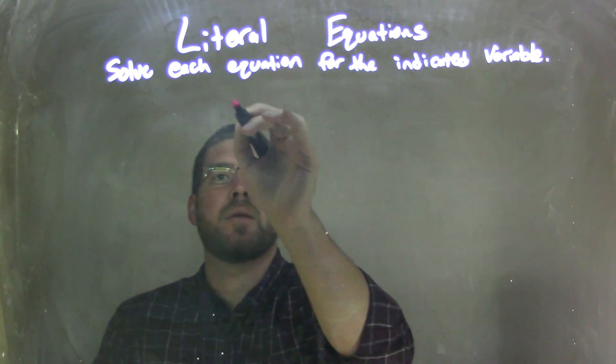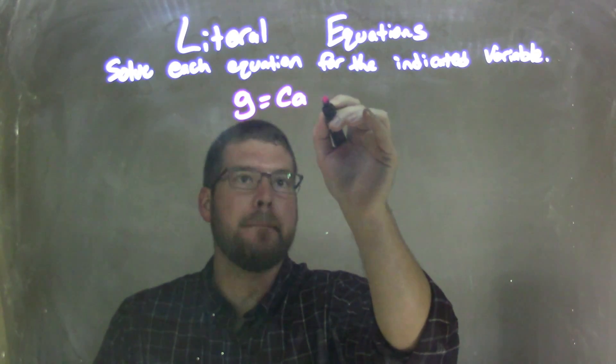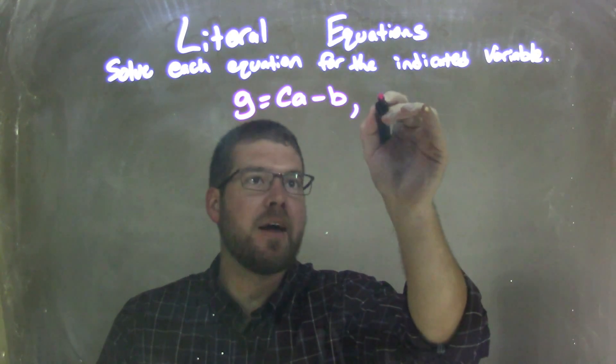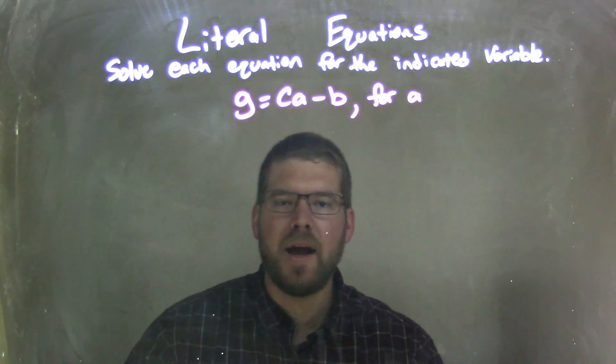So if I was given this equation, G equals CA minus B, and we're solving that for A.